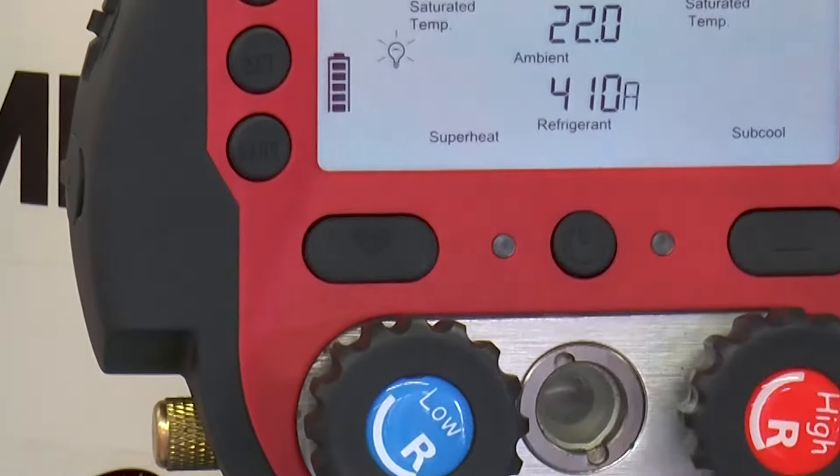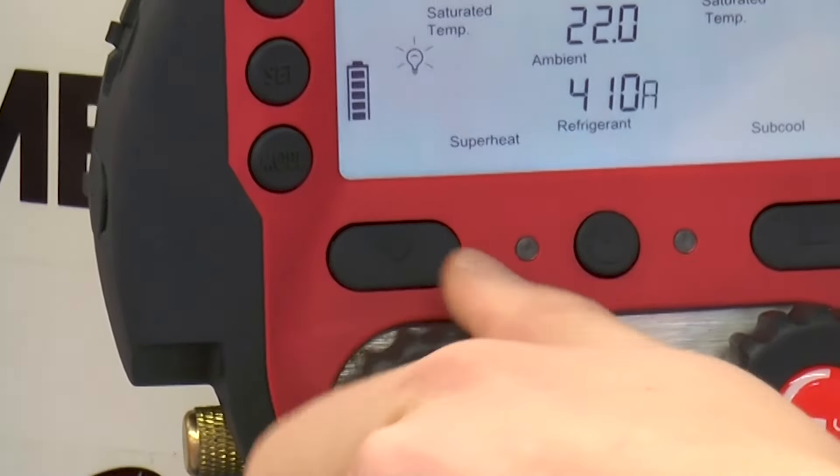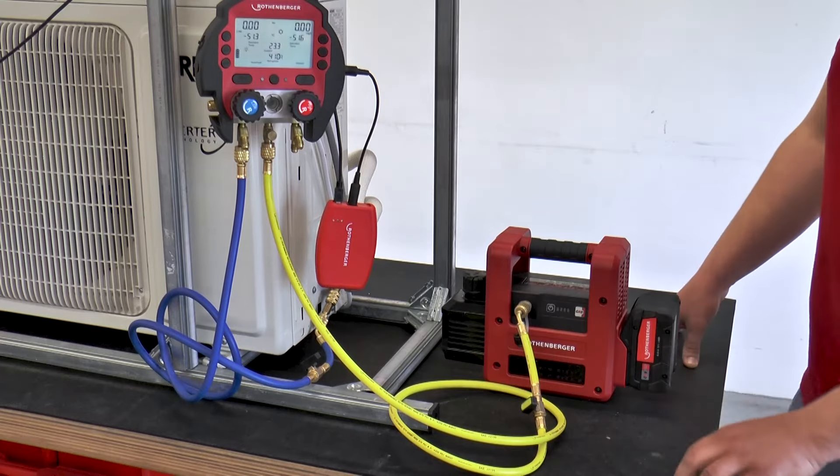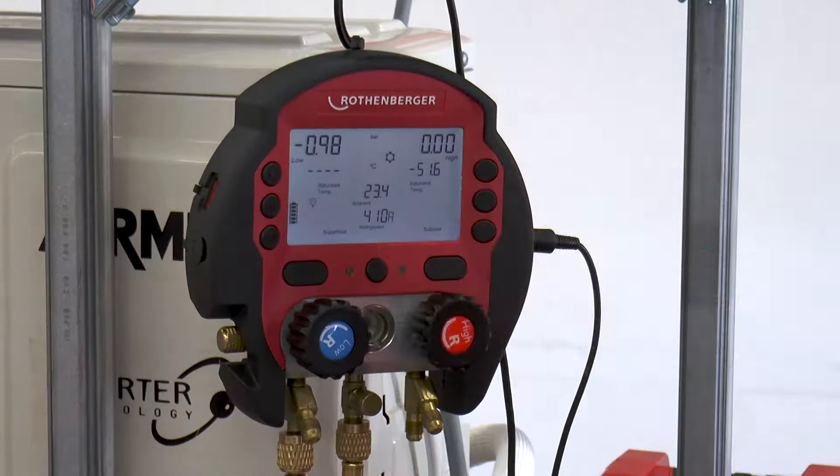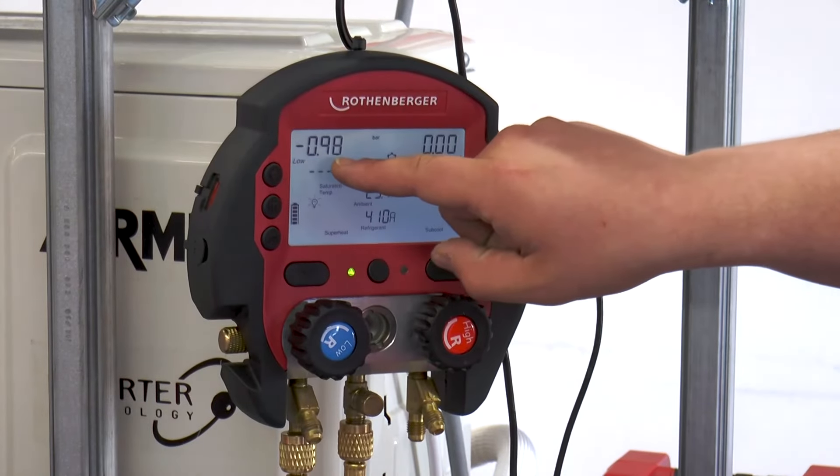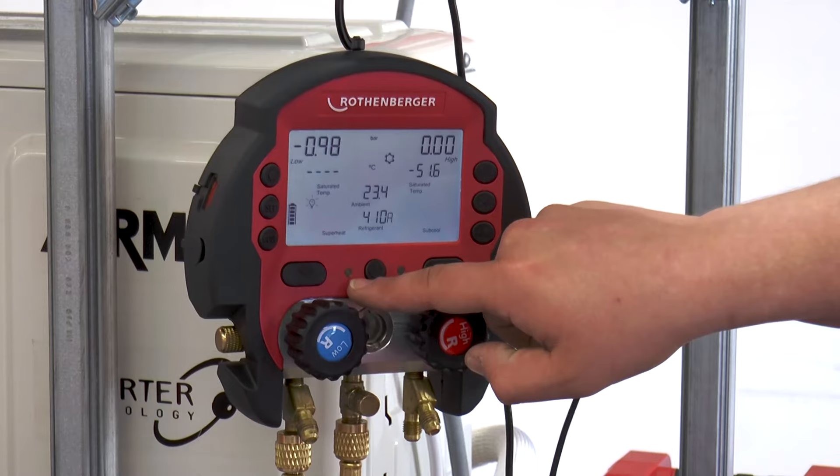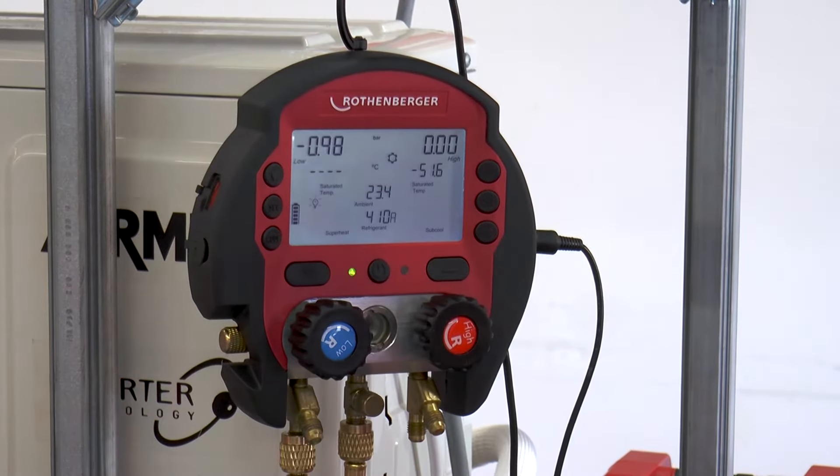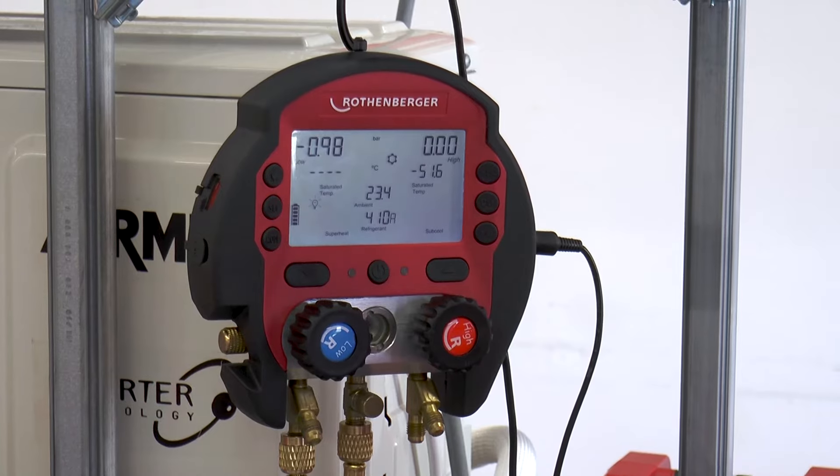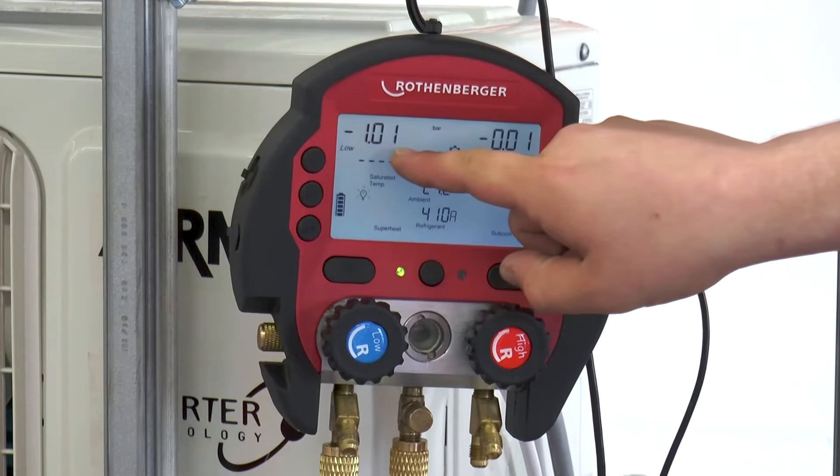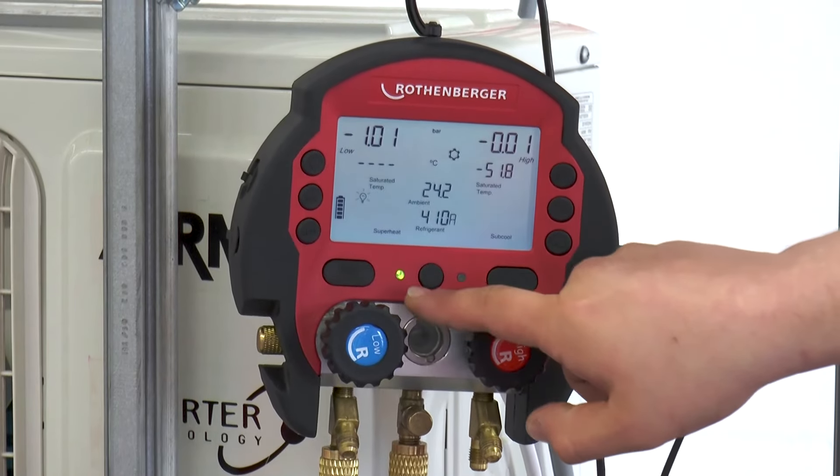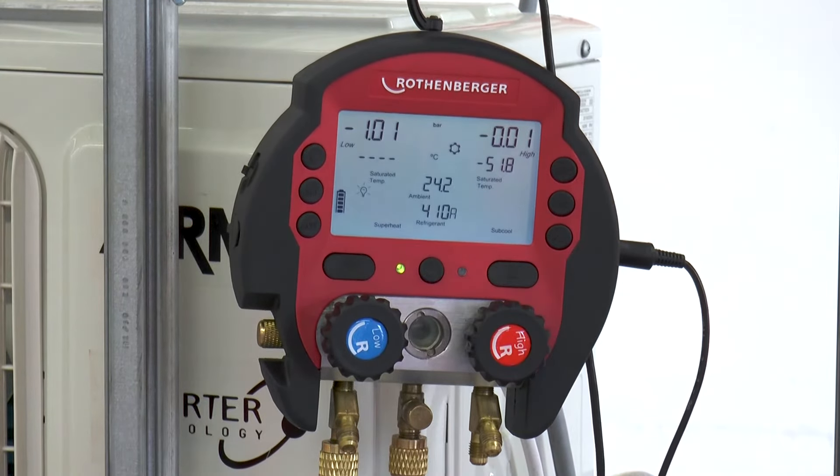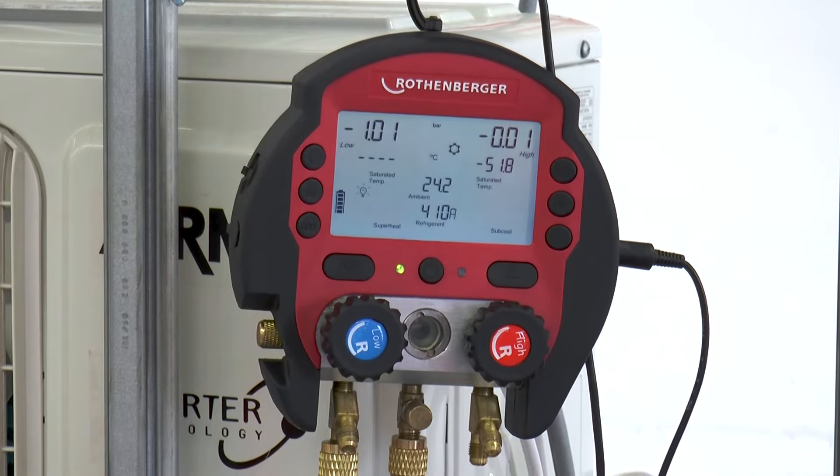For this, the shut-off valve on the low-pressure side is closed. Now, the vacuum pump can be switched off and disconnected from the working hose. A green flashing LED can now be seen on the Rokul. This green flashing LED starts flashing from a vacuum range of minus 0.98 bar. If the pressure remains constantly in this low range, this green flashing LED will stop flashing after 30 minutes and will light up continuously.